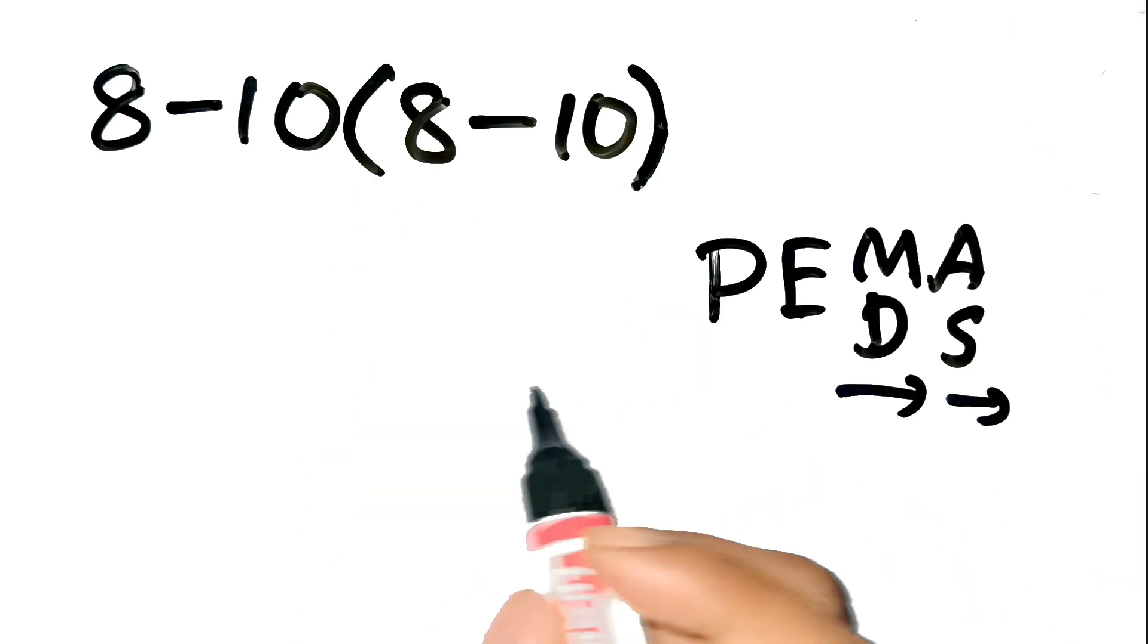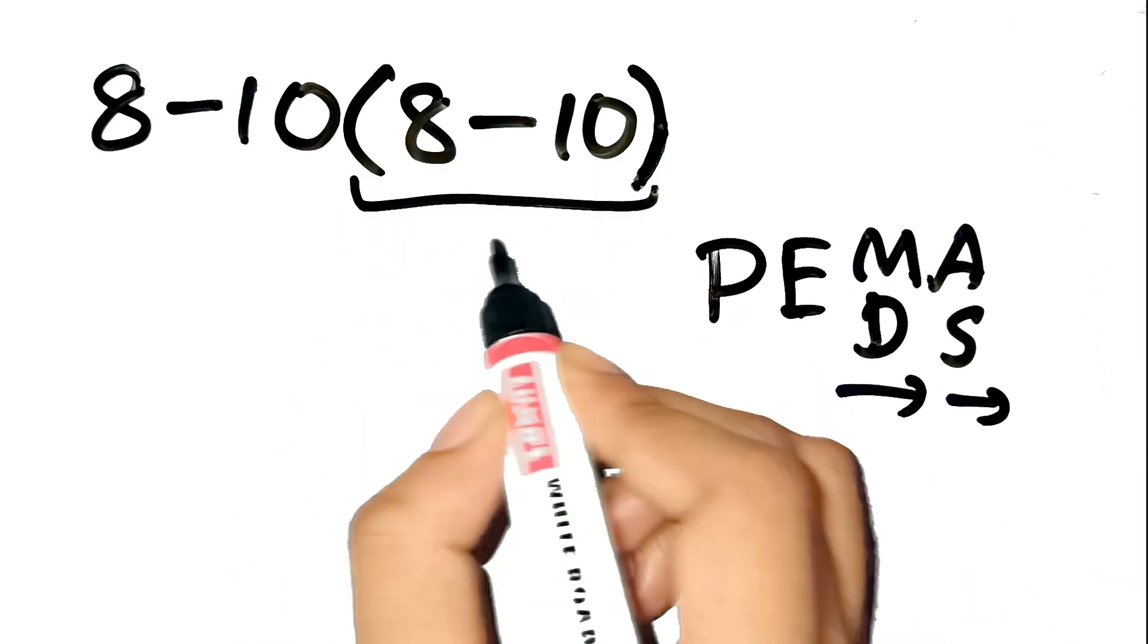First, we deal with what's inside the parentheses. That's 8 minus 10, which equals negative 2.